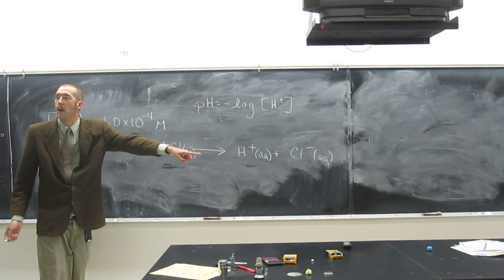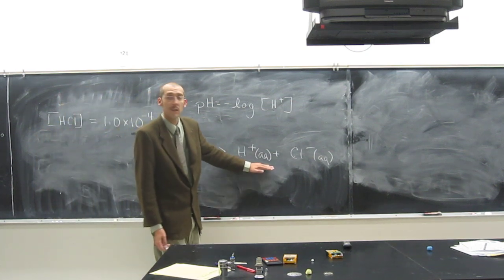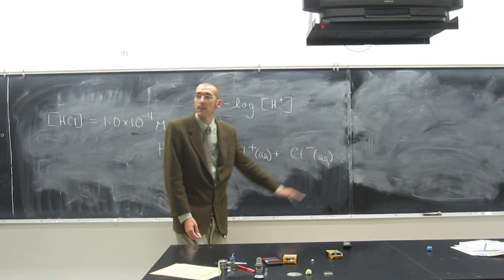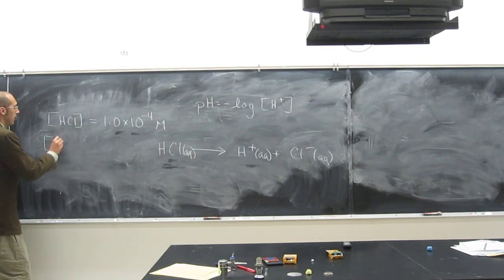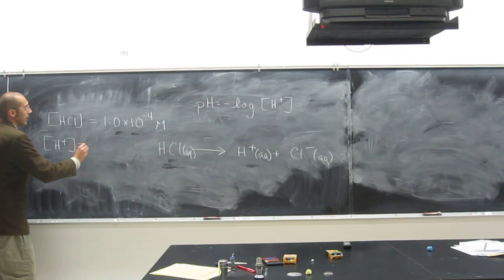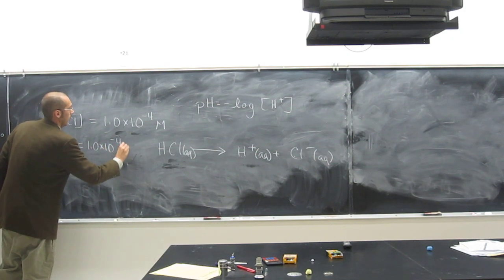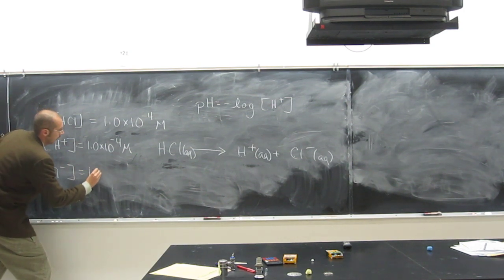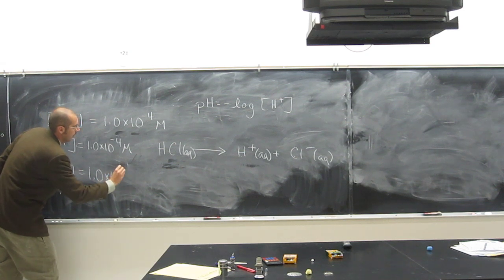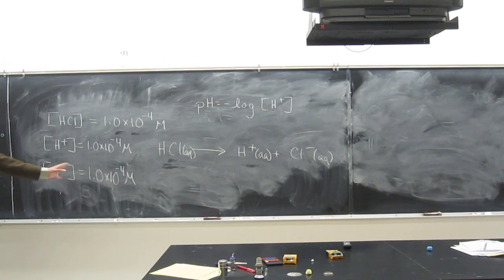One to one to one, right? So, the concentration of this should be the same concentration as this, and the same concentration as this, okay? So, if we know this concentration, we also know the H plus concentration, and we also know the Cl minus concentration, for that matter. Not that it's going to help us in this reaction, but part of this problem. But we do know it all better, okay?